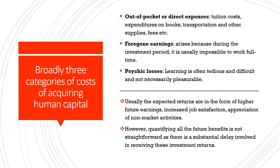The second category is foregone earnings. During young adulthood, when many of us are in schools and colleges, we are already in the working age group but foregoing earnings in anticipation of better future earnings from investing in education. Foregone earnings arise because during the investment period it is usually impossible to work full time. Some people take up part-time jobs to tide over current costs, but the opportunity cost of not being in the labour market is an important cost category.